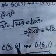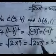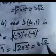Now the distance between C(9, 4) and D(6, 1): CD = square root of (6-9) whole square plus (1-4) whole square = square root of (-3) squared plus (-3) squared = square root of 9 + 9 = square root of 2 into 9 = 3 square root of 2.